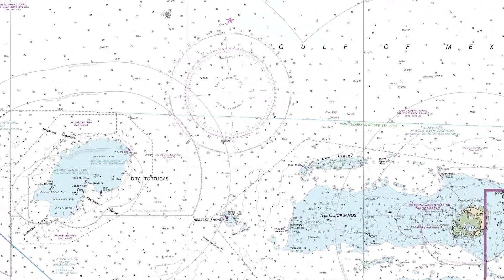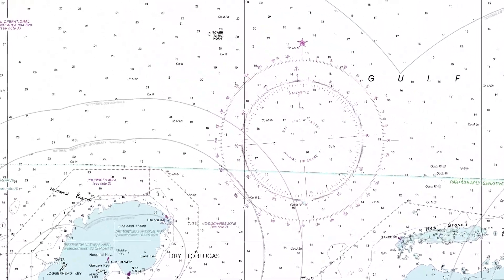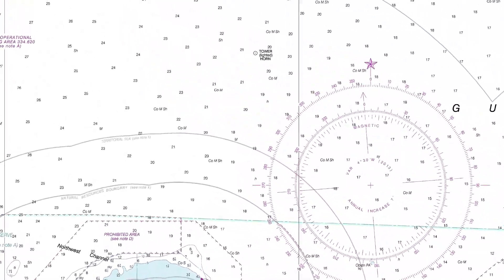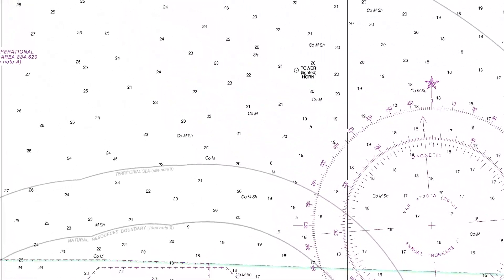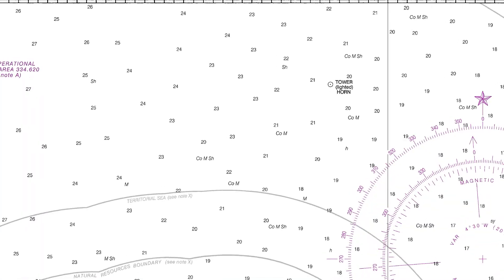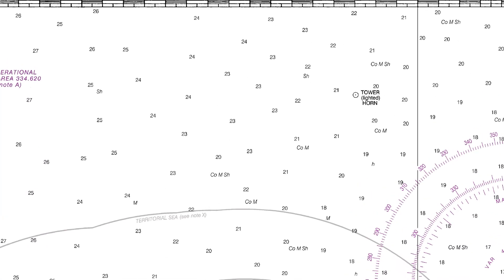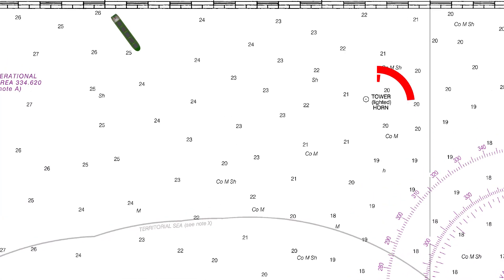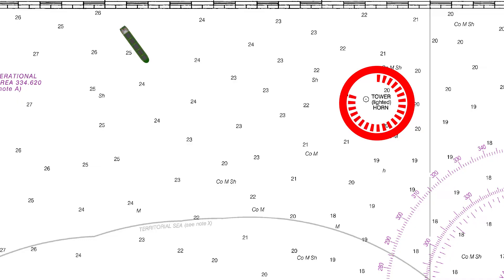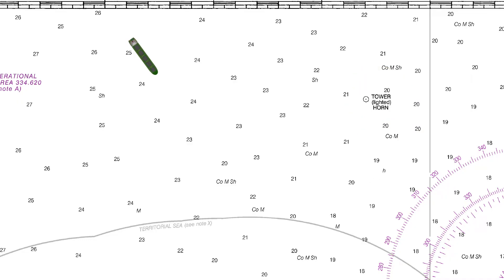In today's video we're going to continue our chartwork tutorials and I'm going to show you how to do a running fix. Say for example you're navigating in this area and you've only got one visual feature. Normally you can't get a fix from a single object, but if you use a running fix, actually you can.